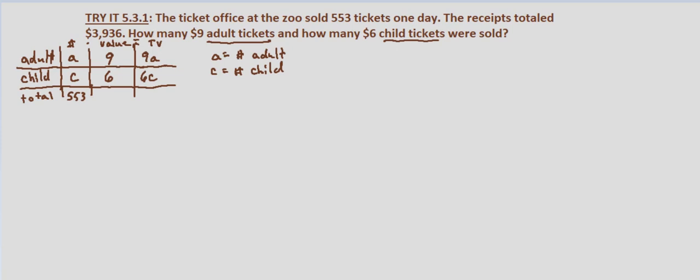The total number of tickets sold was 553 and the total value of tickets sold, both child and adult, was $3,936. So now we can set up a system of equations from this table. We know that a plus c equals 553, and nine a plus six c equals three thousand nine hundred thirty-six.